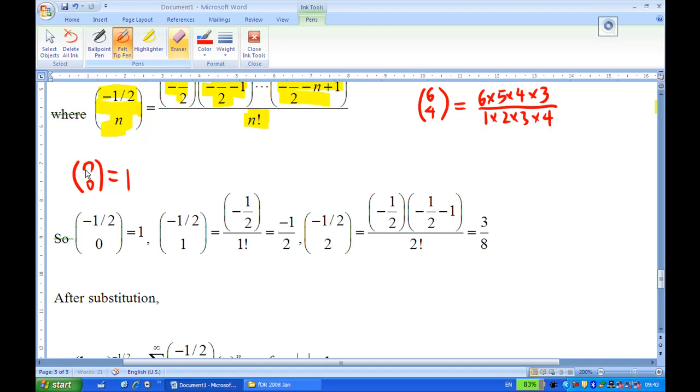Minus half choose 1 is only 1 term, so there's minus half. And minus half choose 2 is 2 terms, so minus half times minus half minus 1 over 2 factorial. You'll find that this is 3 over 8. So we have first term coefficient as 1, second term coefficient is minus half, third term coefficient is 3 over 8.